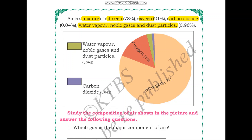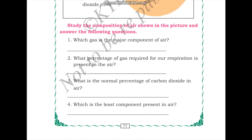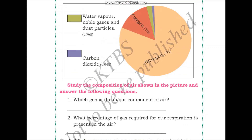Now we can answer some questions. Which gas is the major component of air? The answer is nitrogen — it's the biggest component. What percentage of the gas required for our respiration is present in air? The gas we need for respiration is oxygen. Let's see what percent of oxygen is present in air.